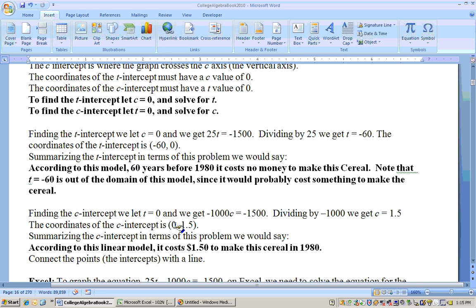And what does this point tell you? The zero is the T, and the 1.5 is the C. So at year zero, 1980, the cost to make this cereal was $1.50. And that's how you would do that problem right there.